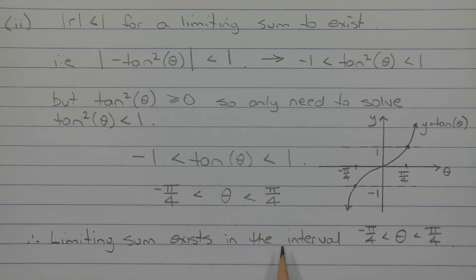Therefore, the limiting sum exists in the interval negative pi over 4 less than theta less than pi over 4.